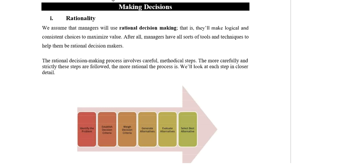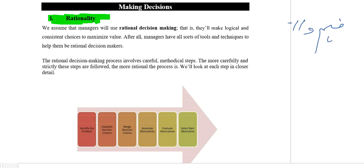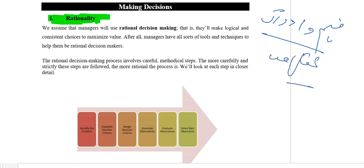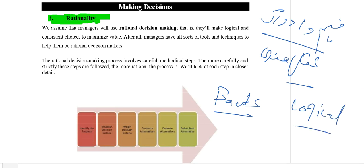Next we will discuss rationality. When we take a decision, we have to make a rational decision. A rational decision is one which is made after analyzing the facts and figures, and this decision is called a logical decision. Whenever we take a decision, it has to be rational — and rational decision making means making a logical decision.